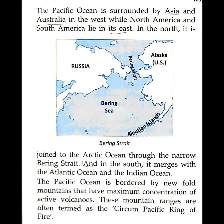The Pacific Ocean is surrounded by Asia and Australia in the west, while North America and South America lie to its east. In the north, it is joined to the Arctic Ocean through the narrow Bering Strait, and in the south, it merges with the Atlantic Ocean and the Indian Ocean. The Pacific Ocean is bordered by fold mountains that have the maximum concentration of active volcanoes. These mountain ranges are often termed the circum-Pacific Ring of Fire.